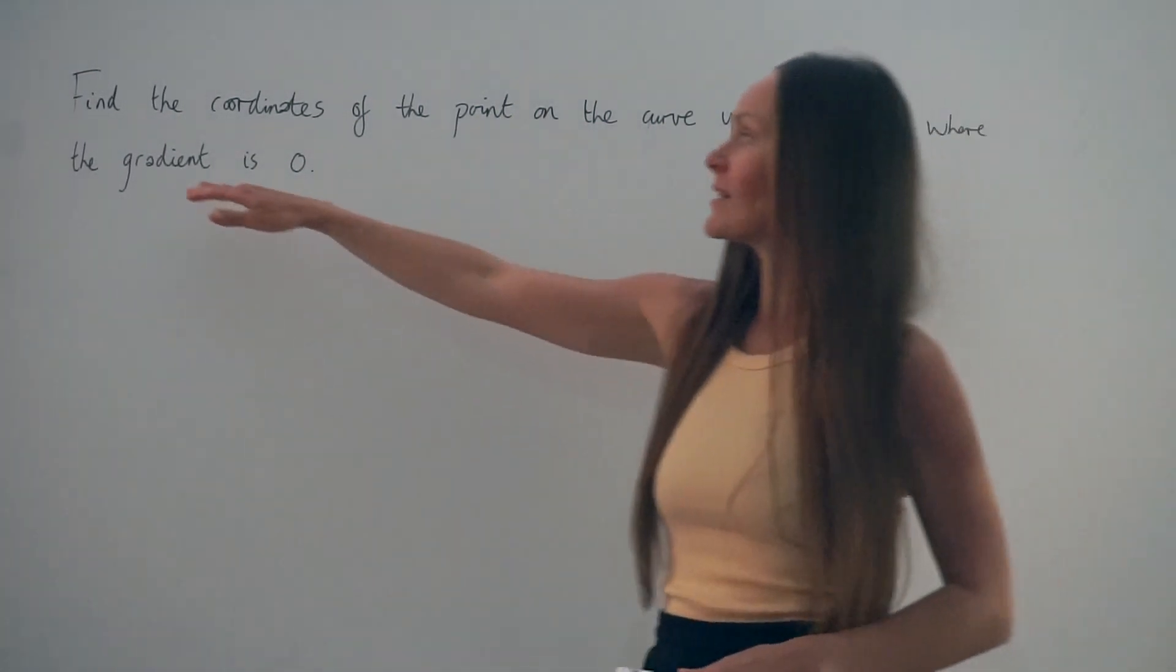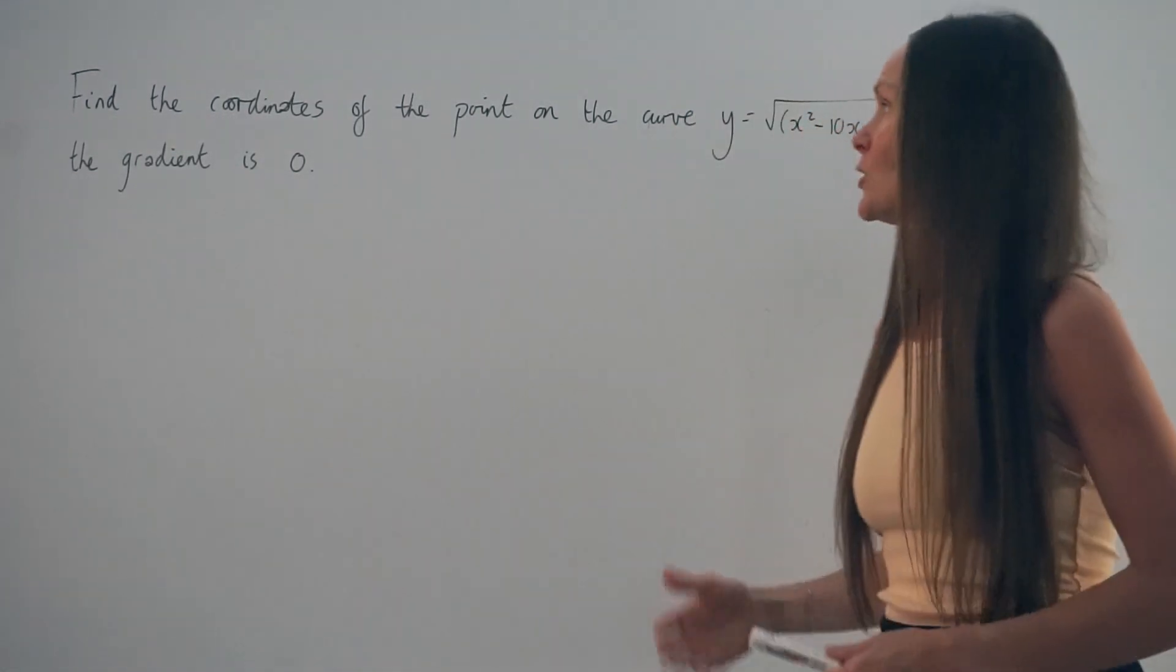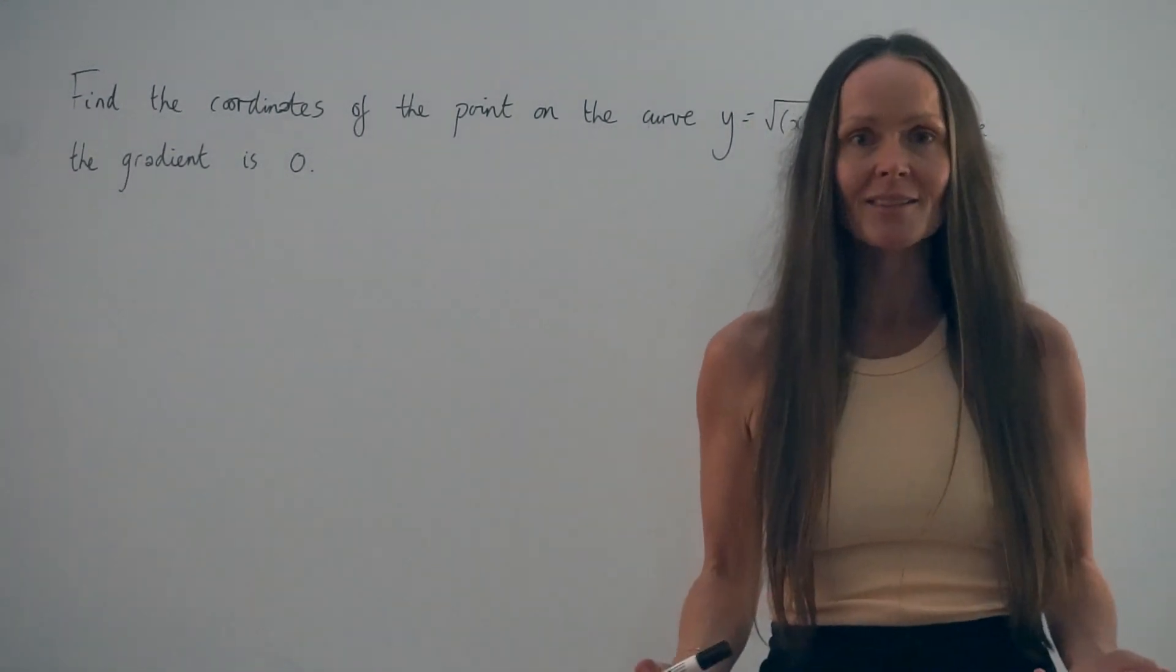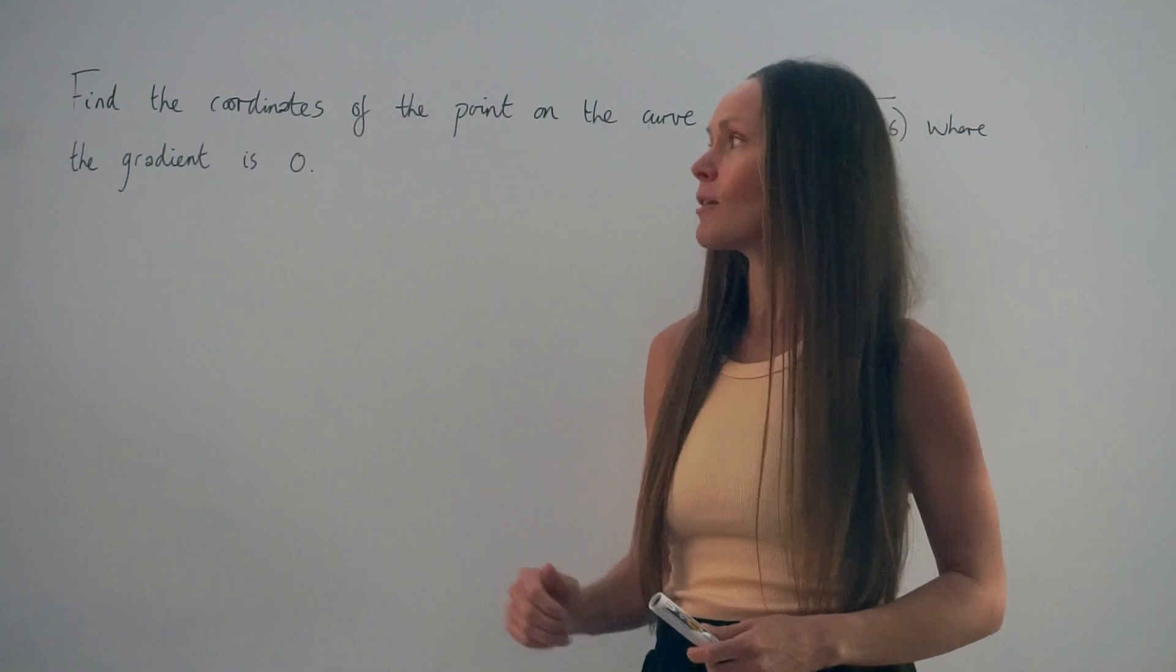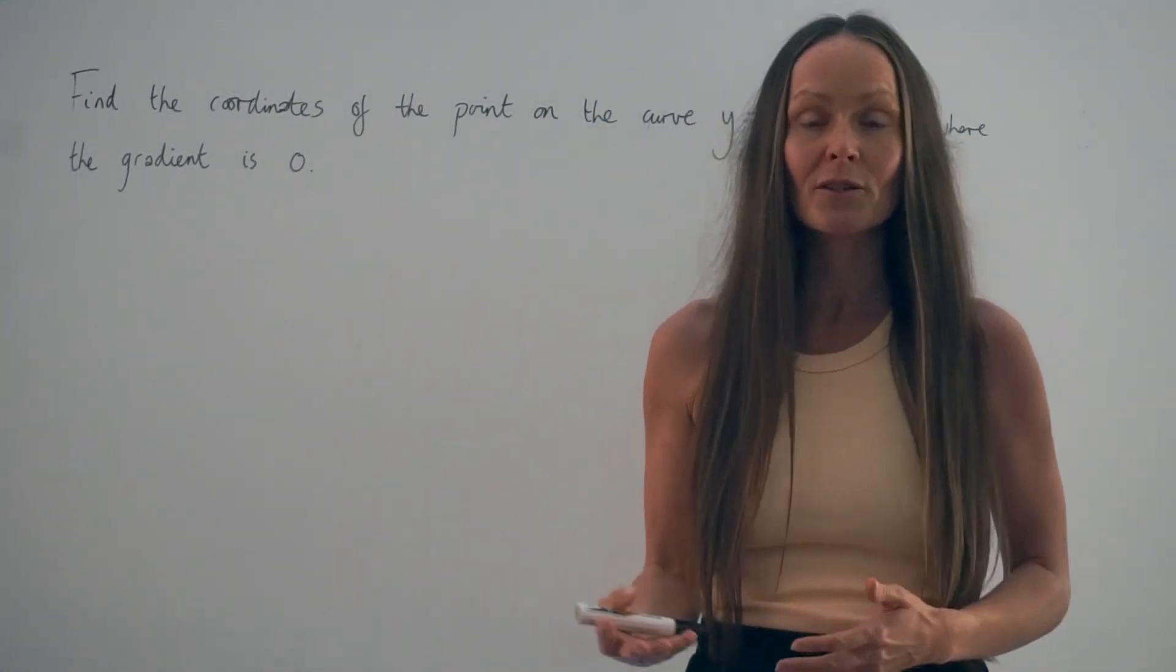Since they've given us the gradient of the curve, you need to think about differentiating, as when you find the derivative of an equation, you're working out an expression for the gradient. And we know the gradient is 0. Hopefully from there, we can form an equation to solve to find the value of x.